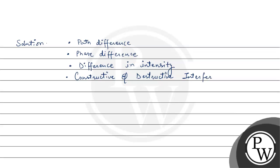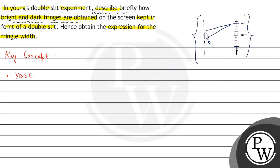This is the reason why we can see bright and dark fringes. Now the second part asks us to obtain the expression for fringe width. Fringe width is the distance between two consecutive bright fringes or two consecutive dark fringes.